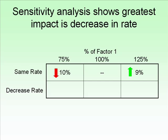Factor one does have some impact when we keep the rate the same, but it's not a large impact. Now let's look at what happens if we decrease the rate. If we don't change factor one but we decrease the rate, we see a drop in present value of 81% — a very significant impact. If we decrease the rate and reduce factor one to 75%, the impact of factor one is present but not nearly as large as the rate decrease. Similarly, increasing factor one to 125% only mitigates the rate decrease by a small amount — the rate is by far the biggest issue.